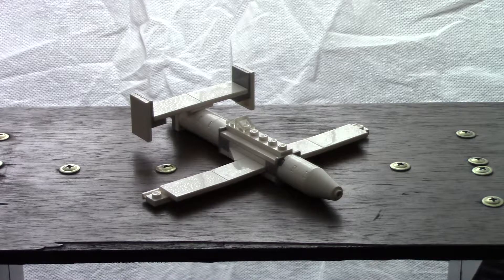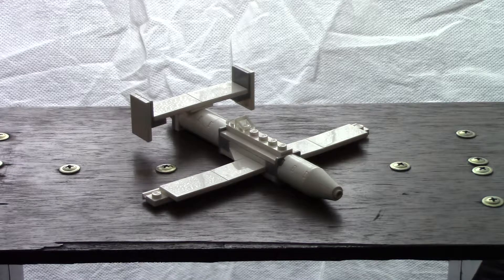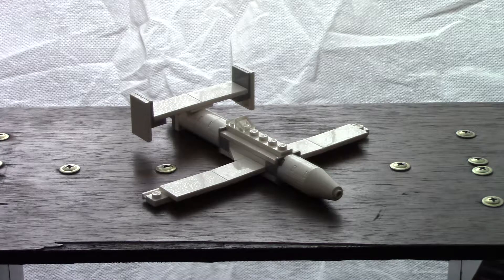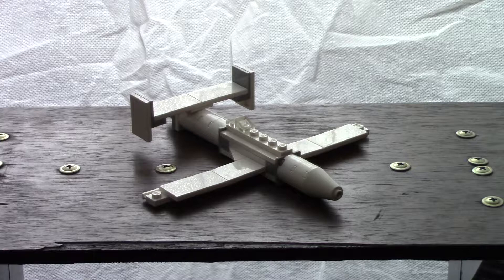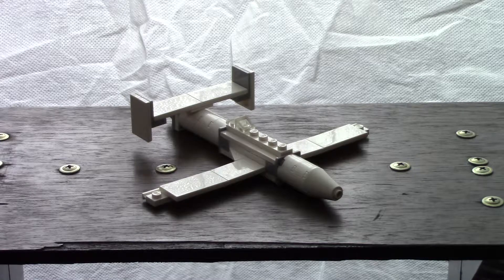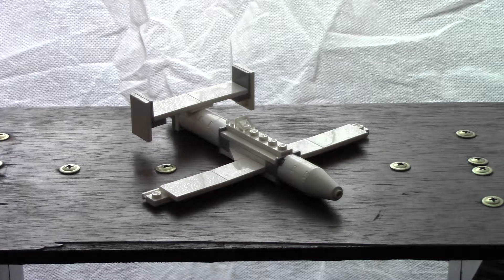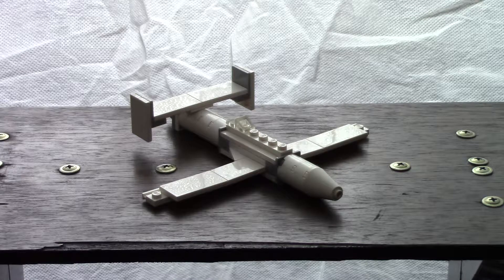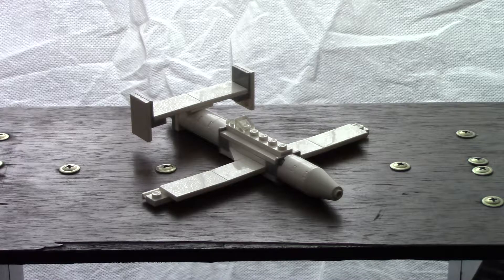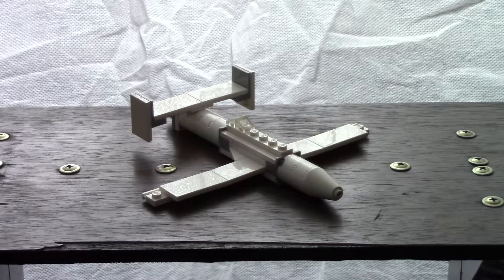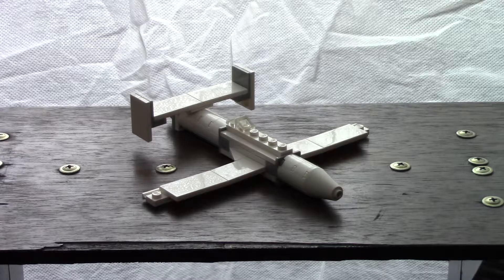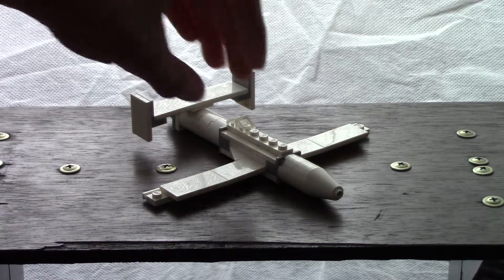But yeah, so today, on with our Lego build. This is the Japanese Oka Bomb, and this was used in World War II as a kamikaze piloted bomb that would be used to crash into American ships. It's been a while since I made a video, so I'm going to probably screw up on a few words quite often.